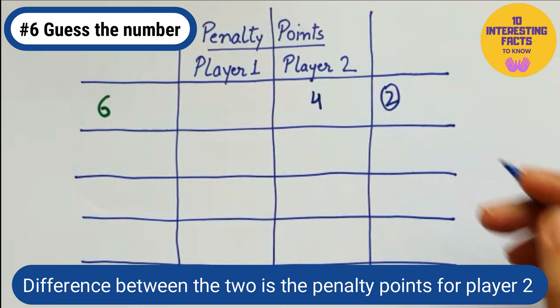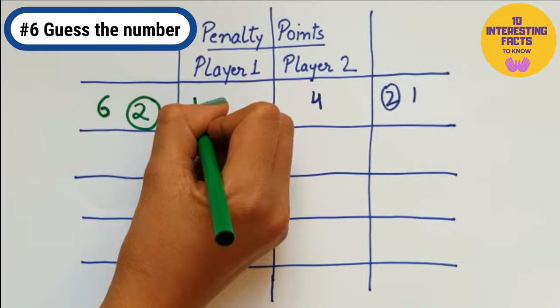So, he got four penalty points as he was four points away from the original number. Then, the players swapped the roles. You can play several rounds of the game and the player with the least penalty points in the end wins.